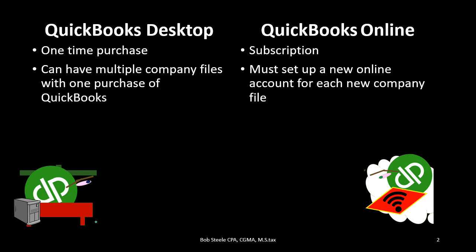This is really helpful if, for example, we're a student and we want to study multiple files. We can use different company files, save them, and work in them similarly to working in a Word document — we can close it, start a new one, start a new company, and transfer data between files. Whereas in the online version, we set up one company typically and work with that one company file all the way through. If we want to start a new company file, we have to set up a new company account on the cloud each time.